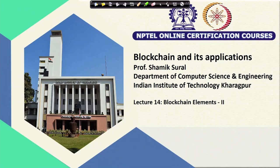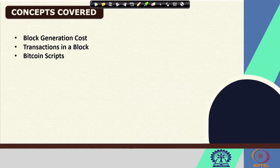Hello and welcome to this fourteenth lecture of our course Blockchain and its Applications. This is the second lecture on the subtopic of elements of blockchain. In the last lecture, we talked about what a blockchain is and how it is constructed out of a collection of blocks connected in the form of a chain. Today, we are going to cover the basic concepts: what is the generation cost for blockchains.